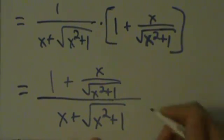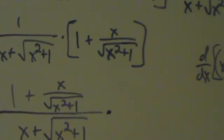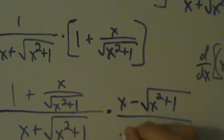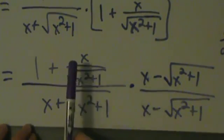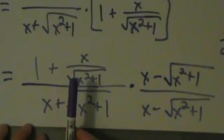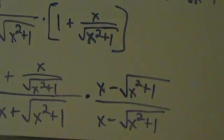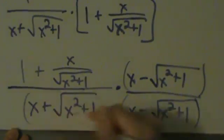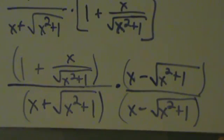Instead, what we'll do is multiply the top and the bottom by the conjugate of the bottom. The conjugate of x plus root x squared plus 1 is x minus root x squared plus 1. If you want to get rid of the complex fraction first you can, but it makes a step later on a little more difficult. So let's just avoid doing that and multiply by the conjugate.